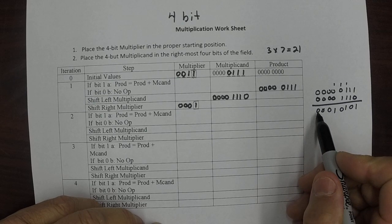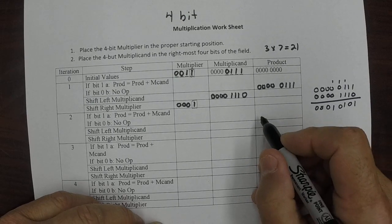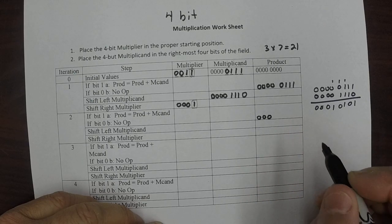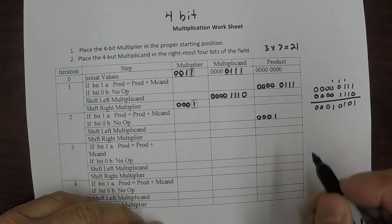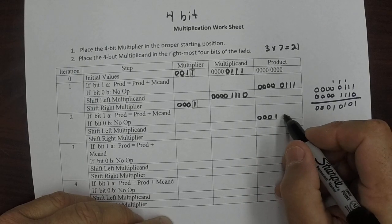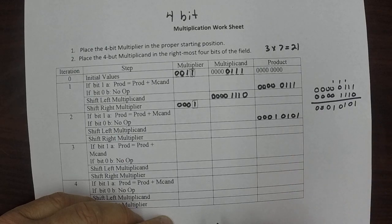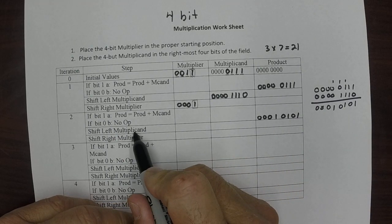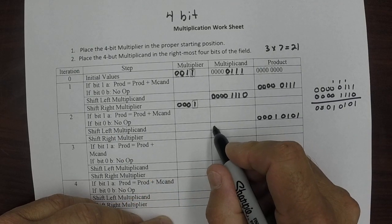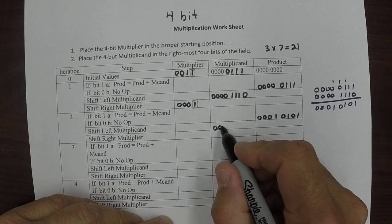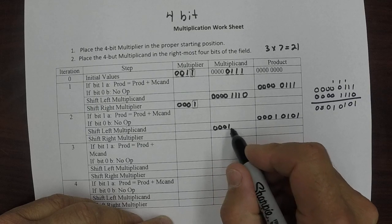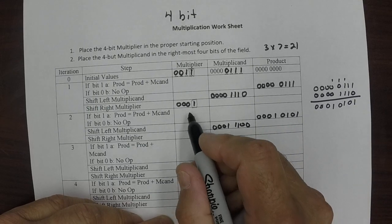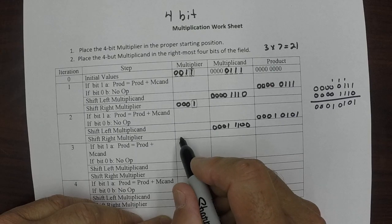So now this number goes in here: 0, 0, 0, 1, 0, 1, 0, 1. We shift the multiplicand left and then we shift the multiplier right.